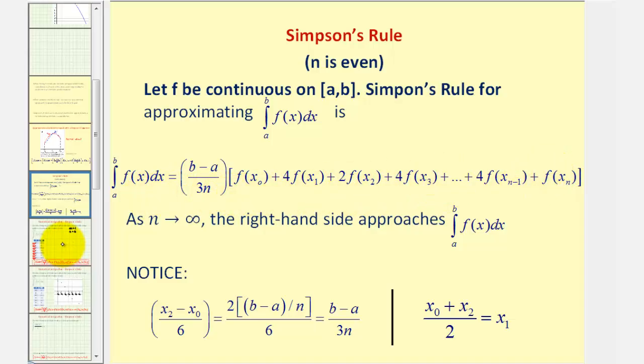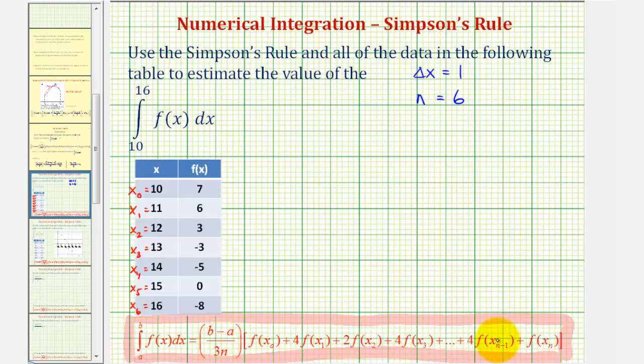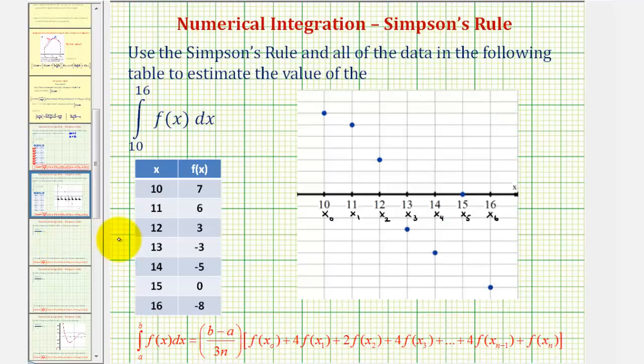So going back to our example, before we complete this formula, let's take a look at these points on the coordinate plane. Here we have x sub zero through x sub six. If we consider these first two intervals from x sub zero to x sub two, if we try to sketch a quadratic through these three points, it might look something like this.